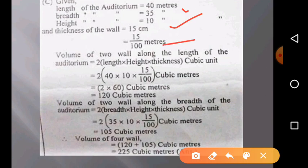Volume of two walls along the length of the auditorium equals 2 × (length × height × thickness) cubic meters. So length is 40 meters, height is 10 meters, and thickness is 15/100. We have two because there are two sides. After calculating, we will get 2 × (40 × 10 × 15/100) = 2 × 60 = 120 cubic meters.